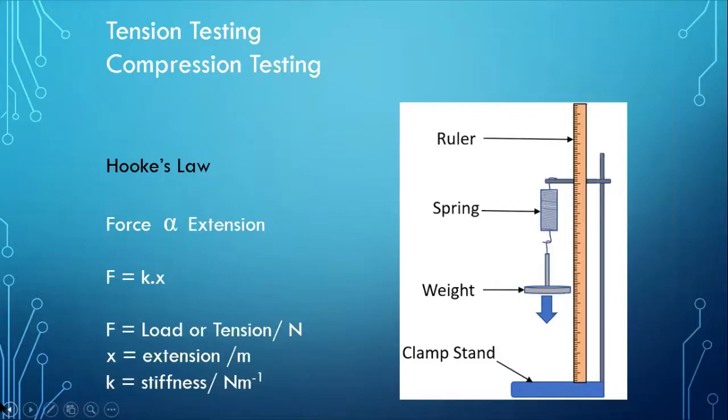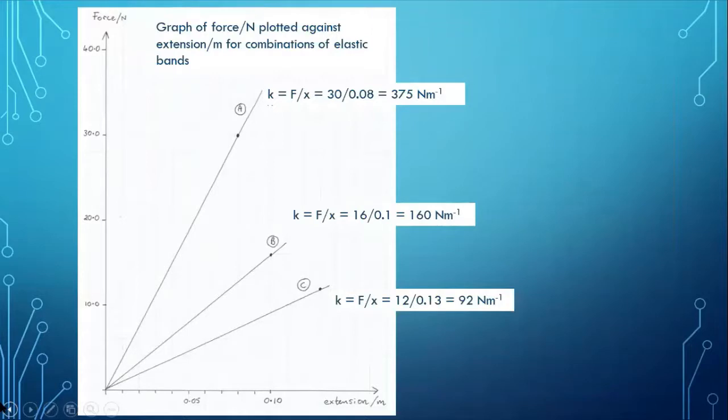Now, we know that some materials are, some specimens of the same material are stiffer than others. Let's follow up with this. Here we've got a force extension graph for different combinations of elastic bands. Now, of course, all of them are obeying Hooke's law. And we've got the gradient of all three, A, B and C. And we've got the stiffness for A as being 375 newtons per metre and so on. Well, let's just look at this. C, which is the least stiff, is three thin elastic bands in series tied together.